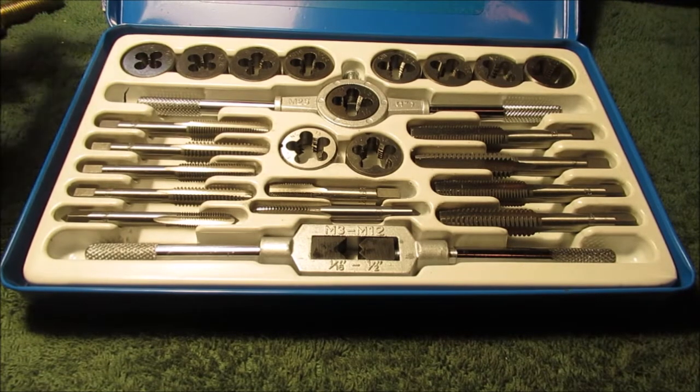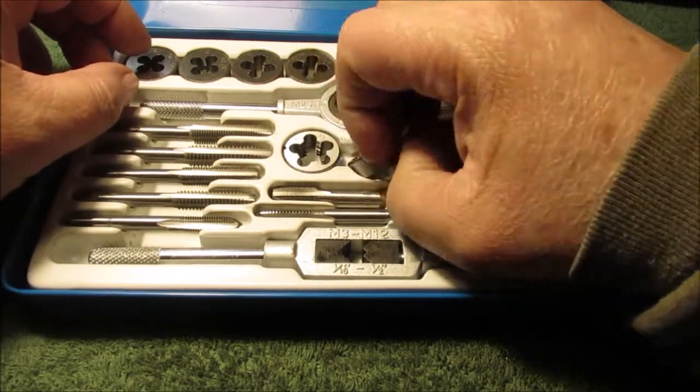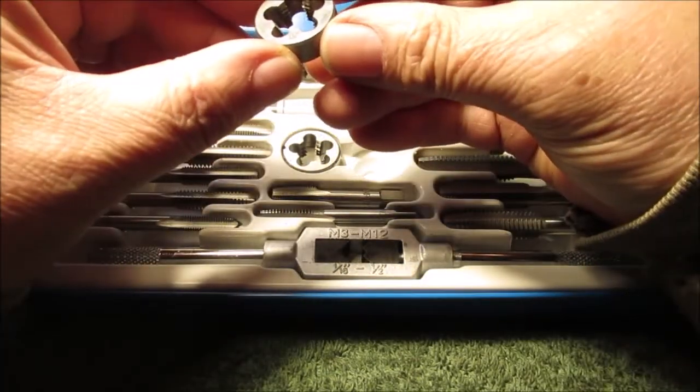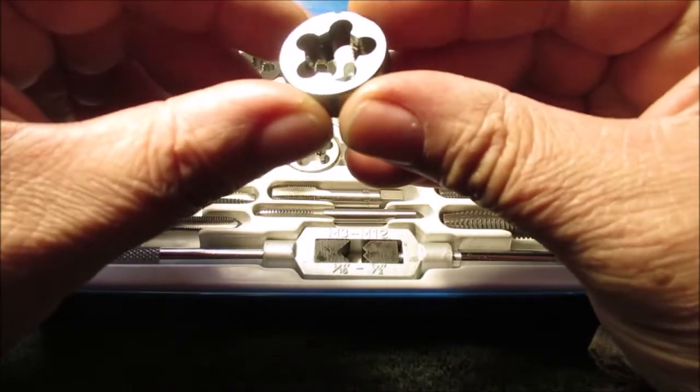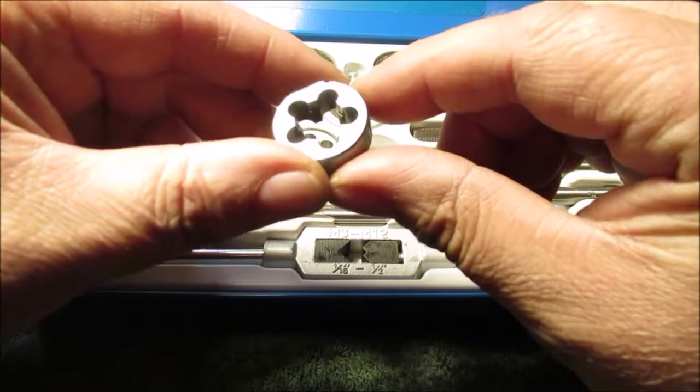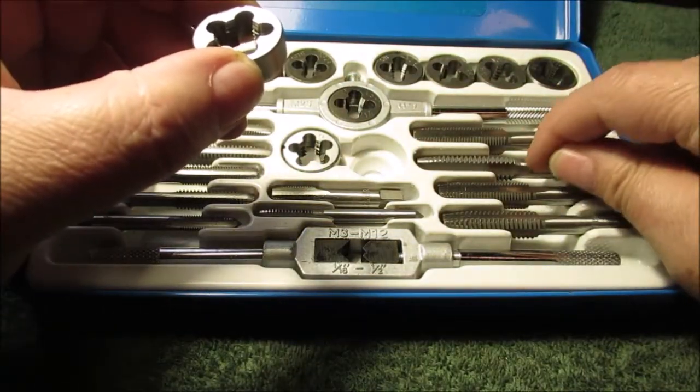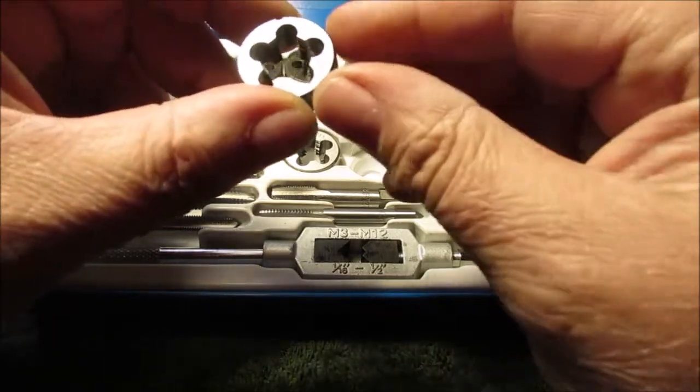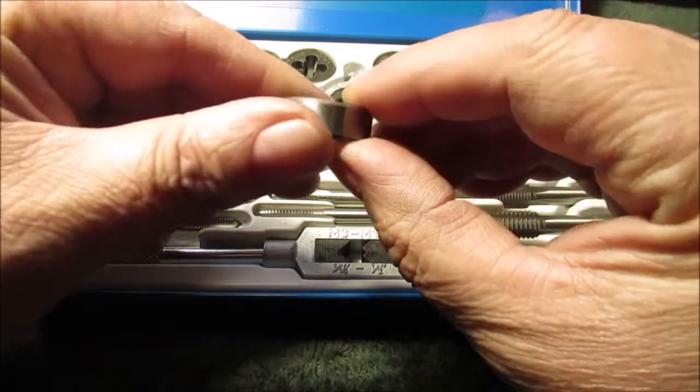This is the half-inch fine 20, national fine 20. These are stamped in here, they're not just inkjetted like Harbor Freight stuff. They are so shiny. Harbor Freight are dull cheap carbon steel.